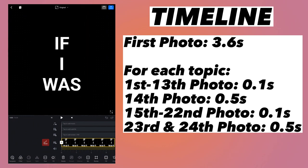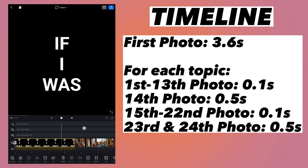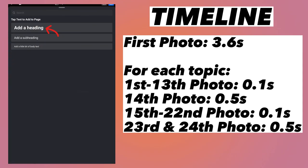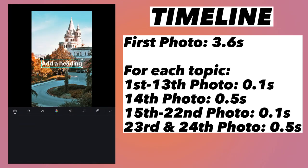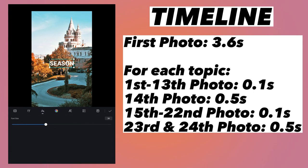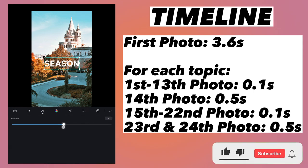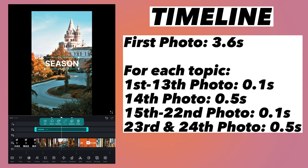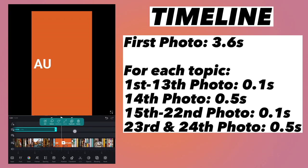Let's add the text for each topic. First, move the playhead to the first photo of the first topic so it appears at that position. Tap on the Text button, click on Text, and select Add a Heading. Since our first topic is season, write 'season'. Go to the font size and increase it to 50. You can change the style, color, or anything else if you want, but I am just keeping it simple. Click OK, and make sure the text ends just before the autumn name images appear — the season name should finish before the full autumn name shows.